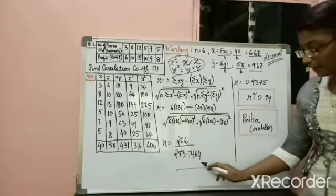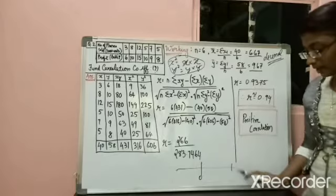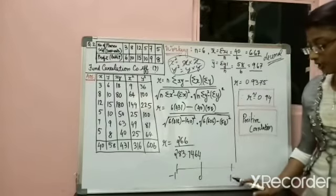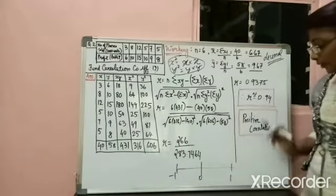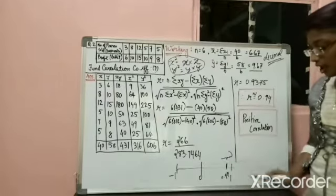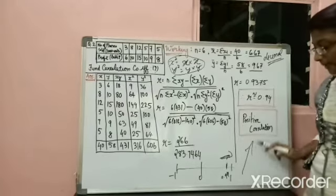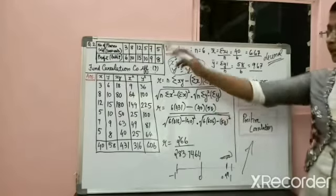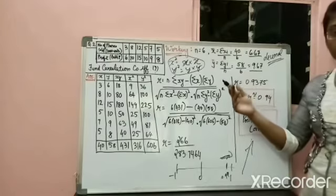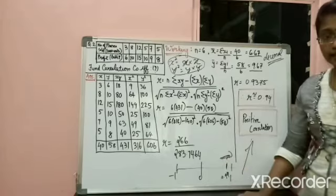Now interpreting r on a number line: we have −1, 0, and +1. Your answer of 0.94 falls nearer to positive 1. So the decision would be positive correlation — the variables x and y are having a positive correlation. I hope this is clear to you.